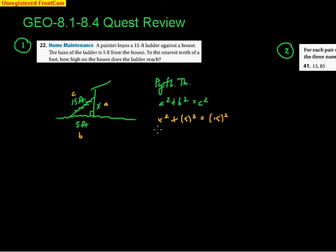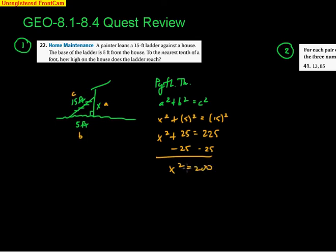We square the values: x² + 25 = 225. Subtract 25 from both sides: x² = 200. The question says to the nearest tenth, so we round. Using a calculator, the square root of 200 is approximately 14.1 feet.